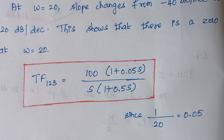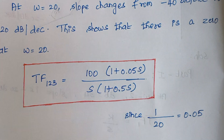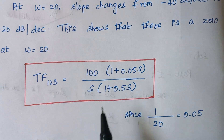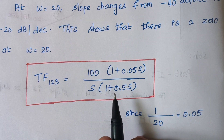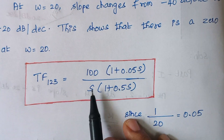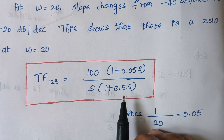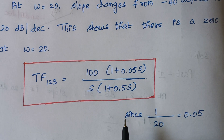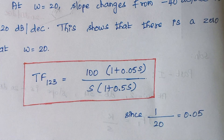In our Bode plot there are three parts, and similarly in our transfer function we have three S terms — term 1, term 2, and term 3. That's all; the problem is complete here. Hope you people understand well. Thank you.